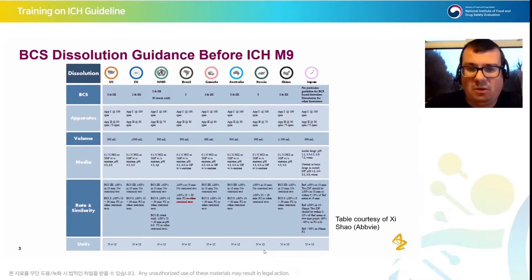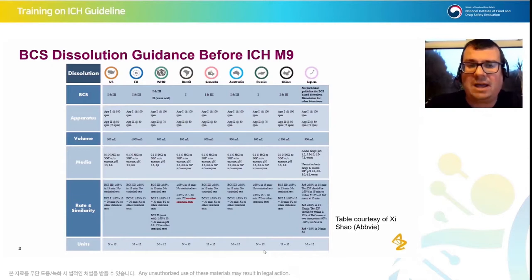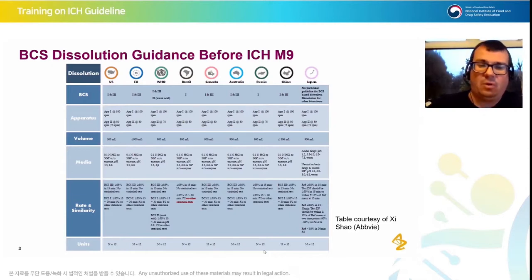From an industrial perspective — which is where myself and Xavi look at this — we would have to do different packages of work for different territories to satisfy those different requirements, which is obviously not very efficient. When ICH M9 came along with this harmonisation, it's obviously a great benefit to industry because in theory we only need to do one package for a BCS biowaiver for a global file.